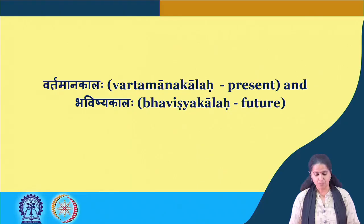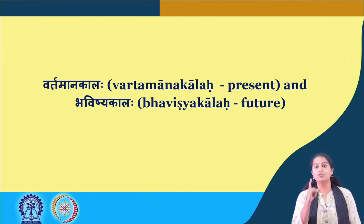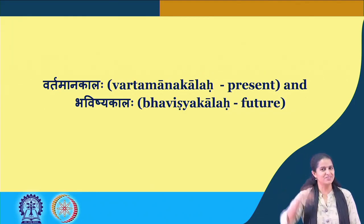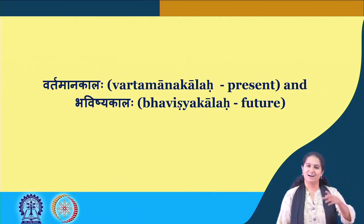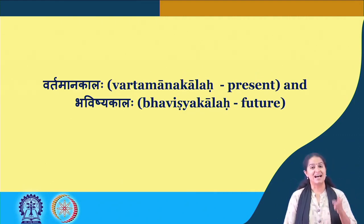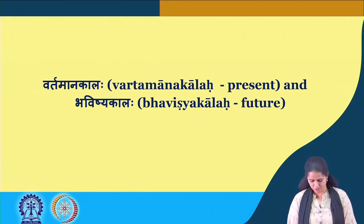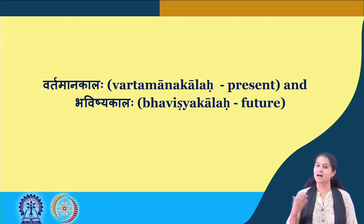We will do some building of vocabulary. Let us look at the vartamana kala and the bhavishya kala of jnna — you have already done this before in our previous lessons. Saha janati, tau janitaha, te jananti; tvam janasi, yuvam janitaha, yuyam janitaha; aham janami, avam janivaha, vayam janimaha. And for the bhavishya kala, jnasyati — and then the rest follows like the bhavadigana.